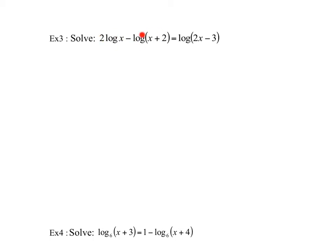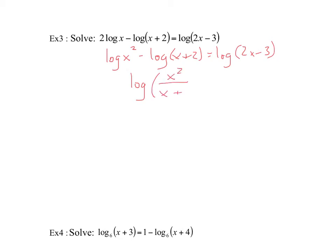Example 3 is another equation where every single term has a log in it, similar to example 1. The first thing I'm going to do is use the log properties — I've got a coefficient of 2, so I'll put that as an exponent. What we have is log(x squared) minus log(x plus 2) equals 2 log(2x minus 3). Notice the base of this log is 10 because it's not written. Using log properties, the subtraction on the left lets us divide the arguments, giving log of x squared over (x plus 2) equals log(2x minus 3). Since both sides have log base 10, the arguments must be equal.